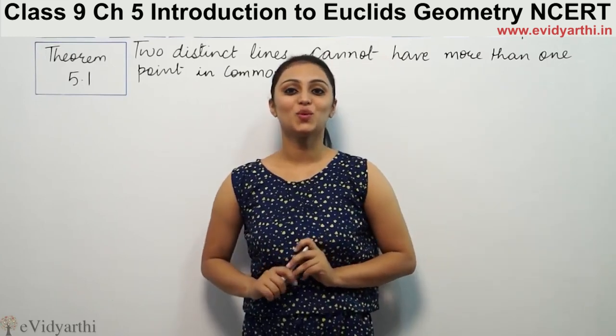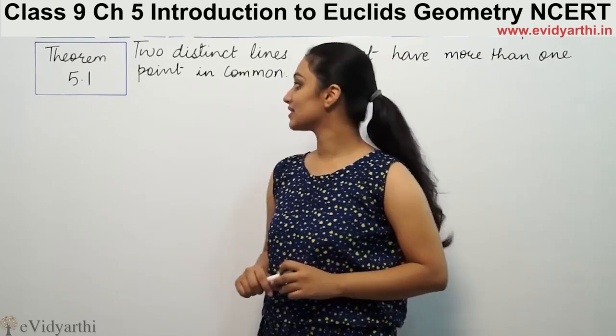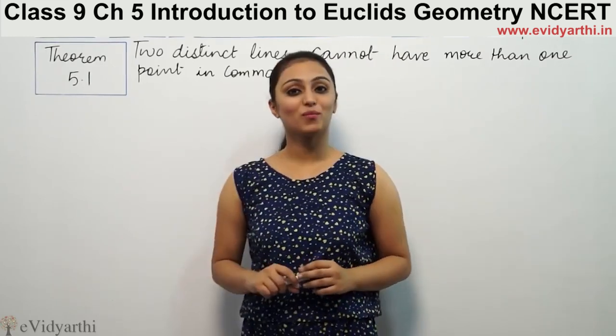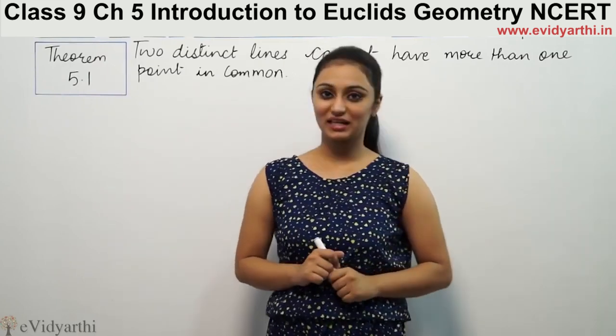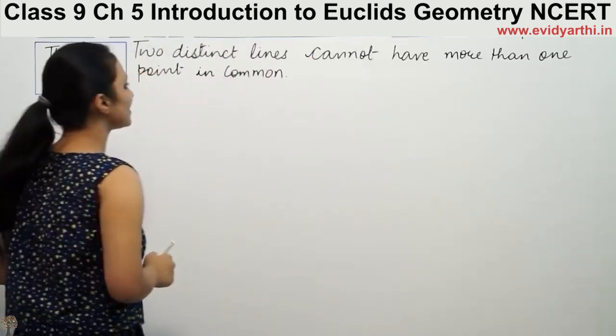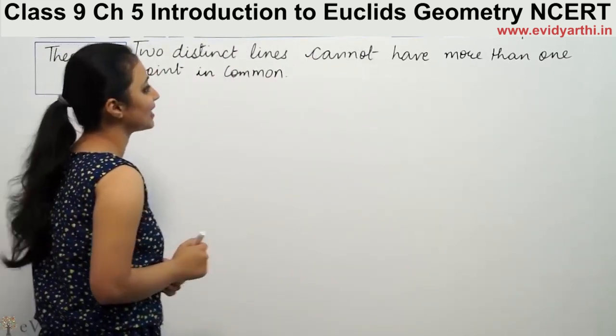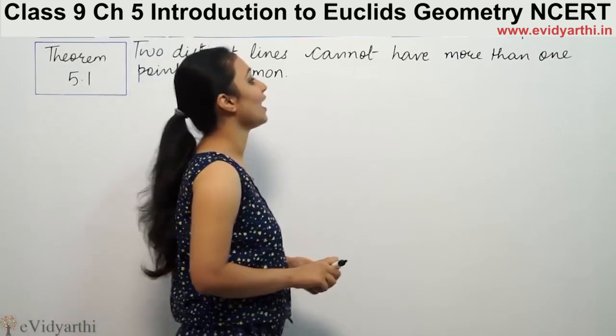Hi, this is Khushbu with another theorem of Euclid's geometry. This is theorem number 5.1 from NCERT page number 85. This says: two distinct lines cannot have more than one point in common.